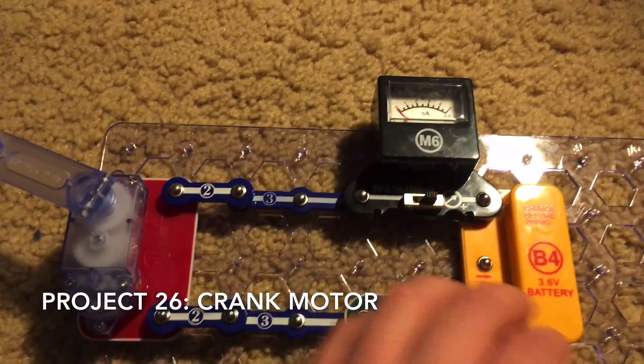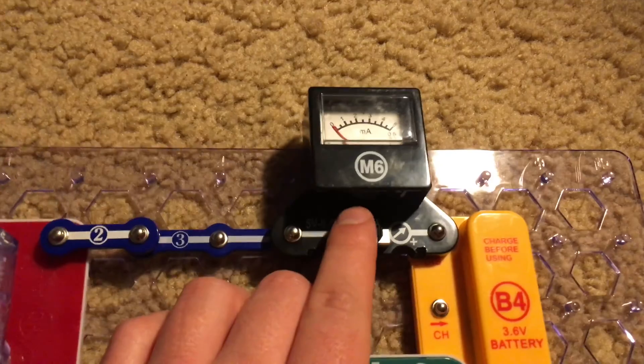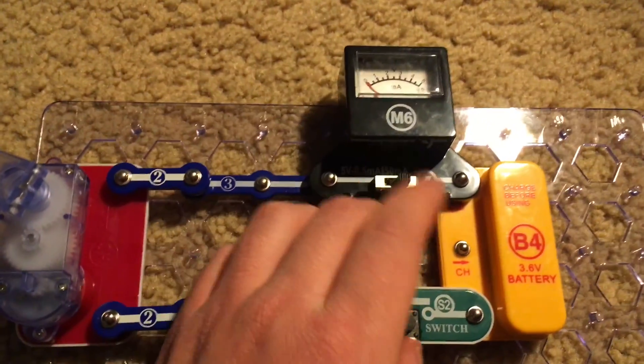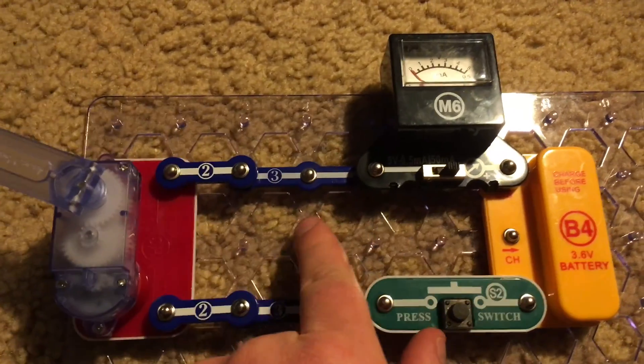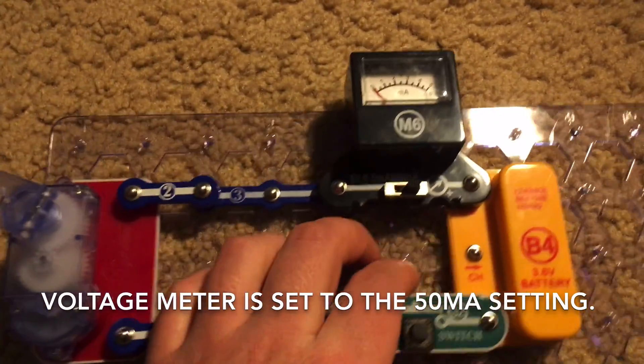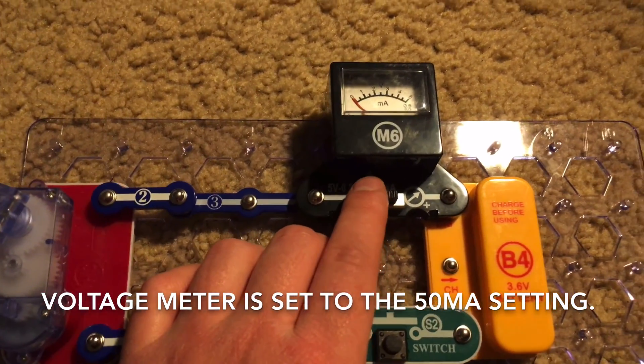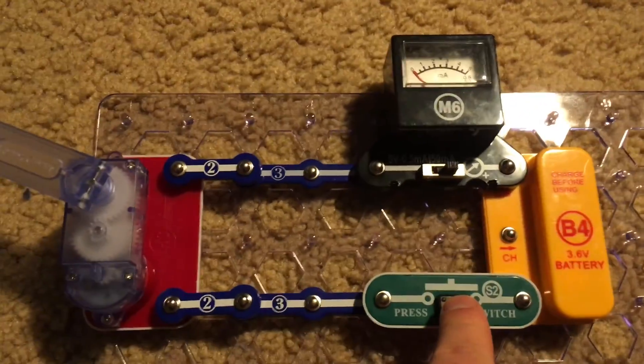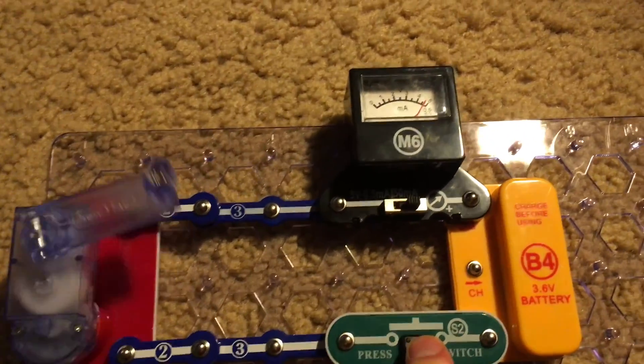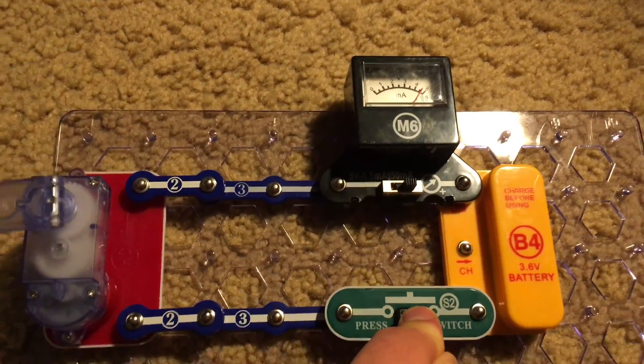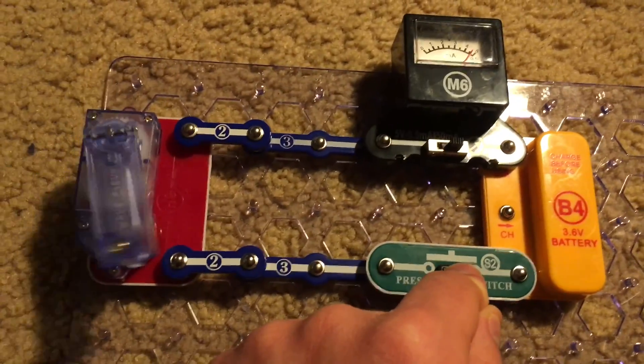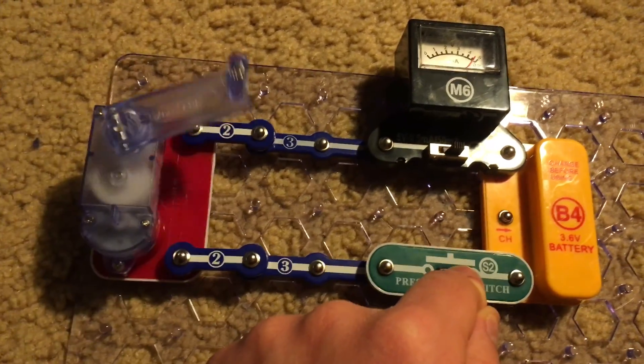We're now going to observe how much current is generated when certain components are operating in this circuit. We're going to begin with the hand crank. We have the voltage meter set on the 50 milliamp setting and we'll hold down the press switch. The meter reads over 45 milliamps as the hand crank spins.